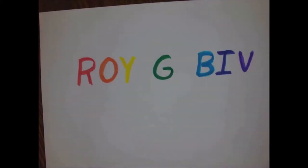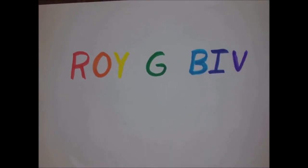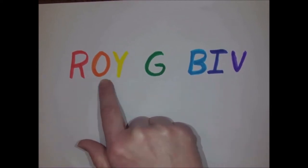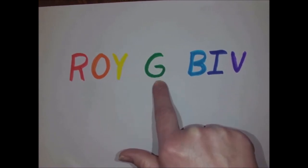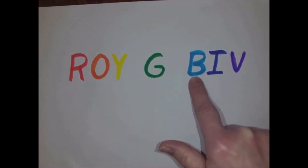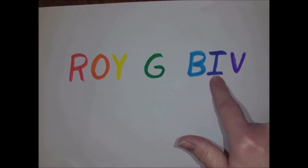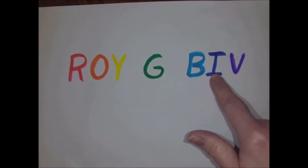We've talked about this in class before. Roy G Biv are the colors of the rainbow: R is for red, O is for orange, Y is for yellow, G is for green, B is for blue, I is for indigo, and V is for violet.